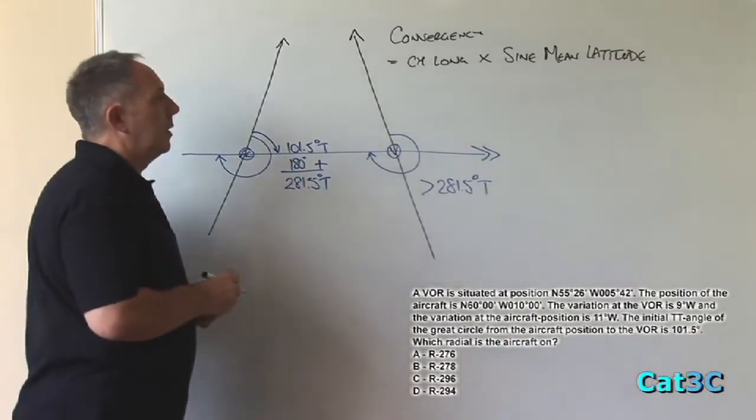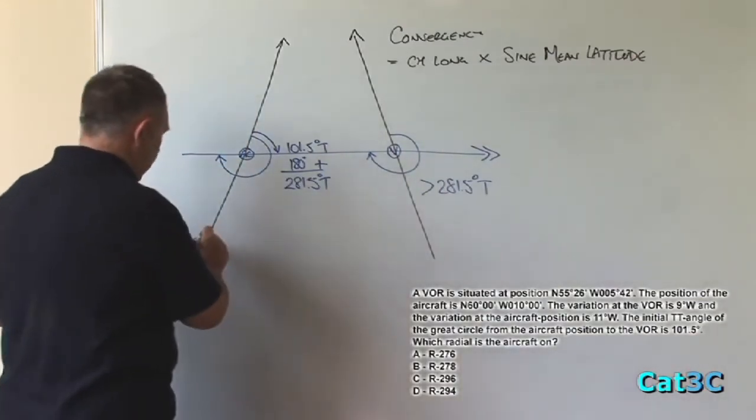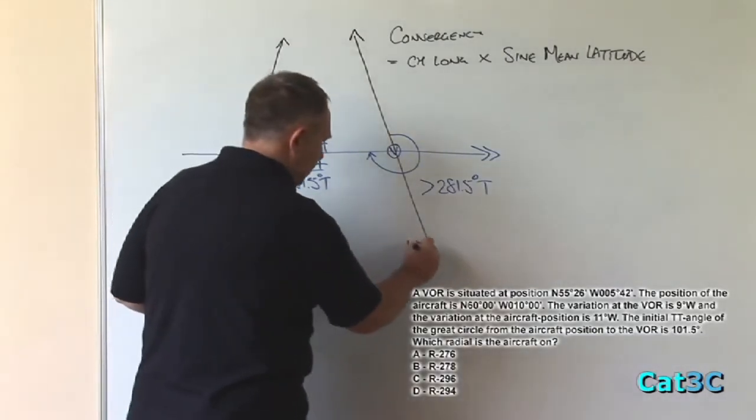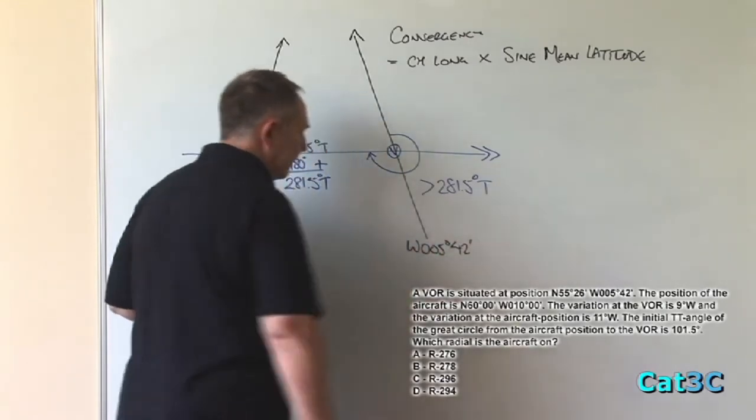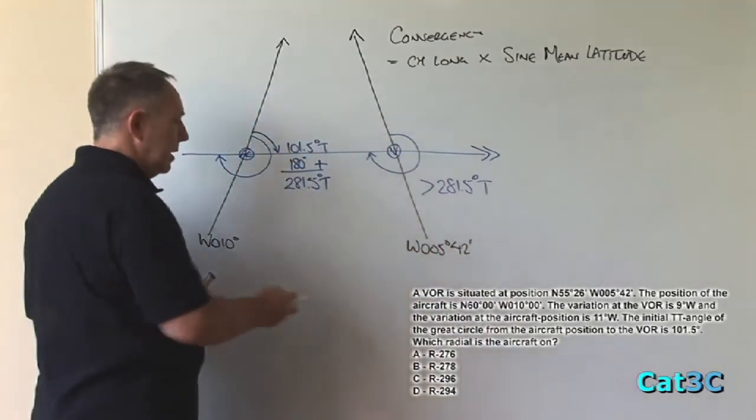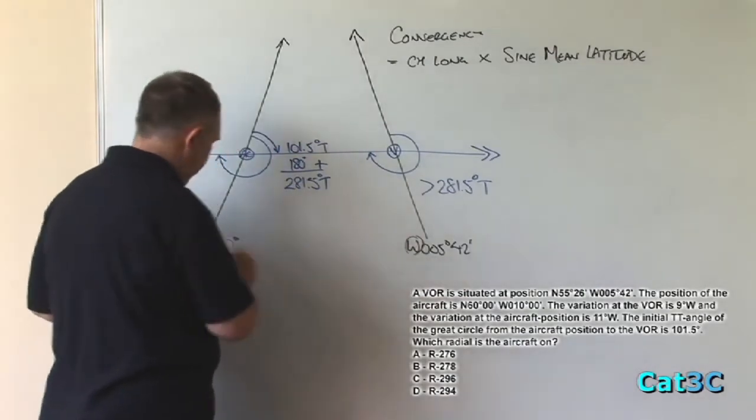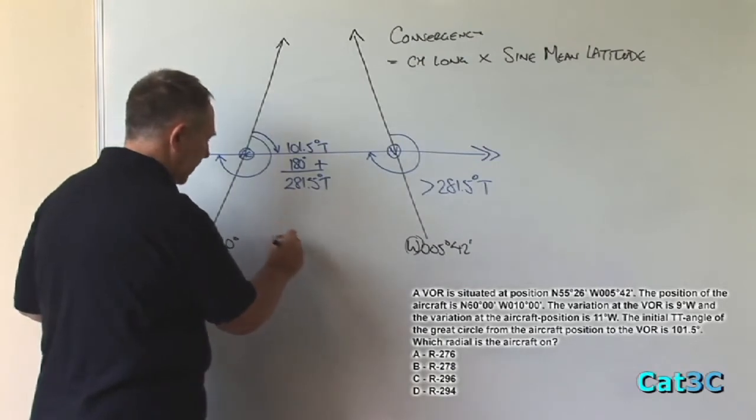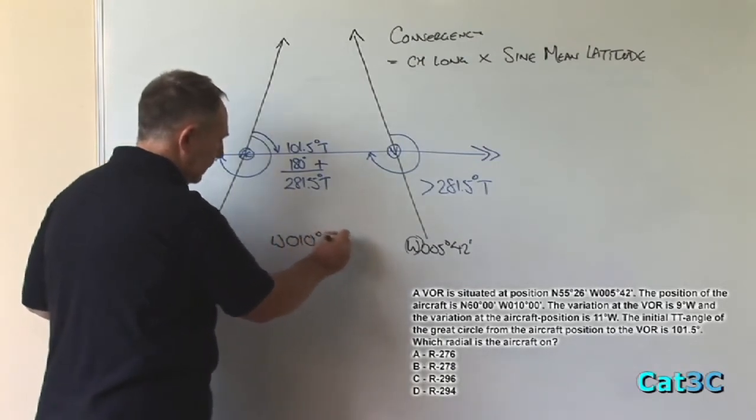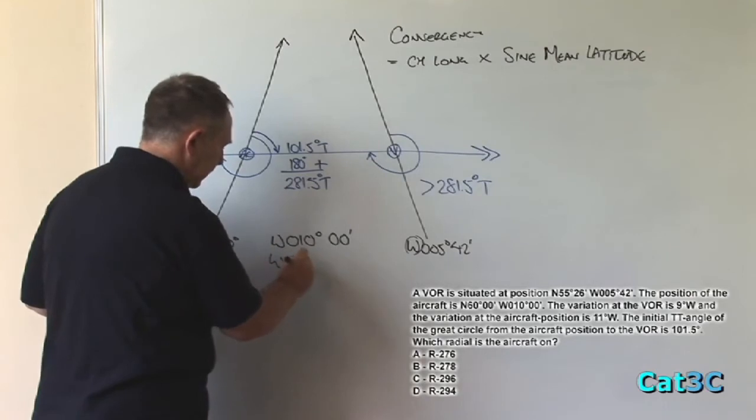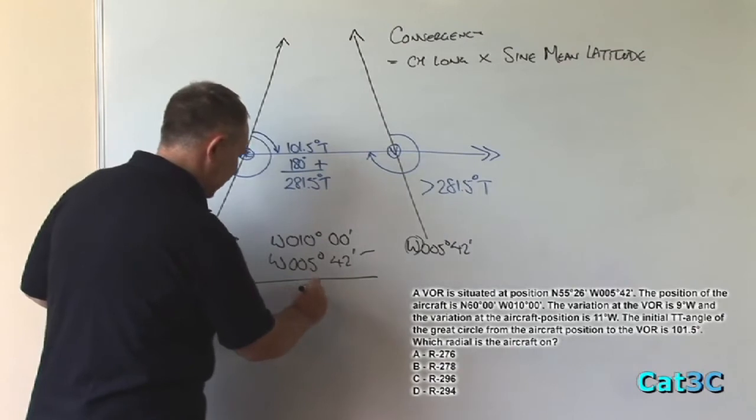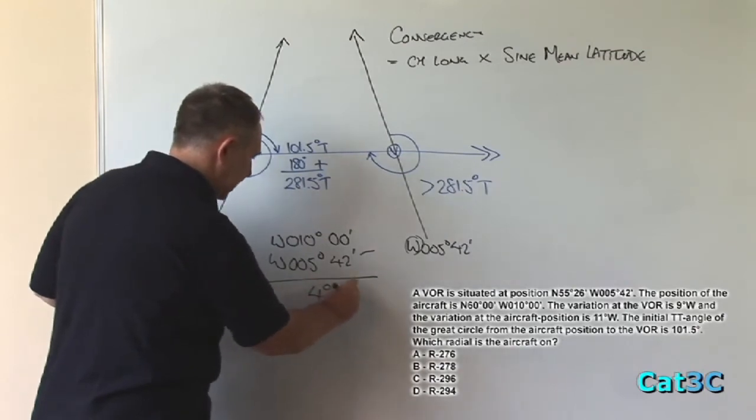Convergency is equal to change of longitude multiplied by the sine of the mean latitude. Okay, first part of that is the change of longitude. We know that this is west 10 degrees and we know that this meridian is west 5 degrees and 42 minutes. To calculate the difference, as they are both in the same hemisphere, both western hemisphere, we subtract the lesser number from the greater number. And we find that the answer is 4 degrees and 18 minutes.